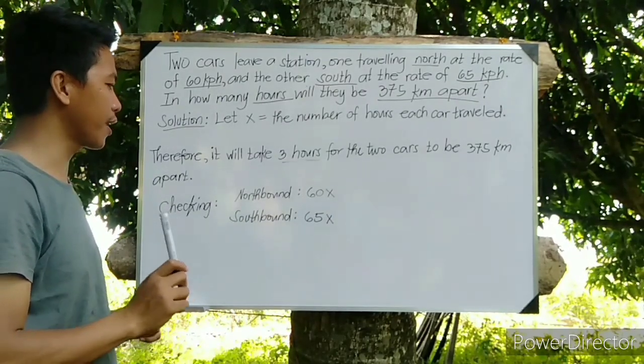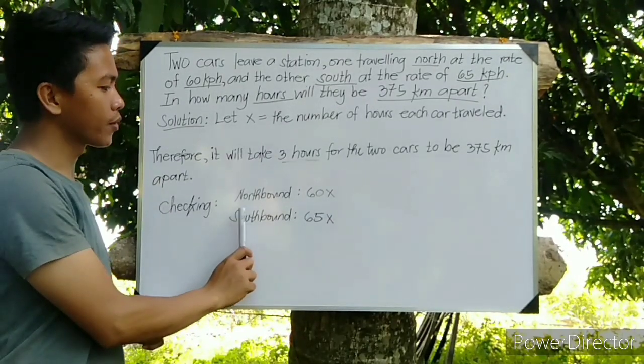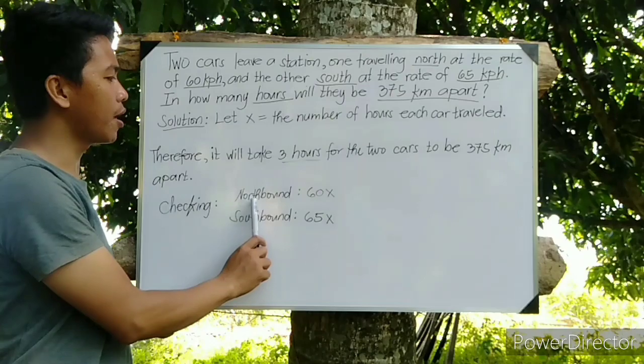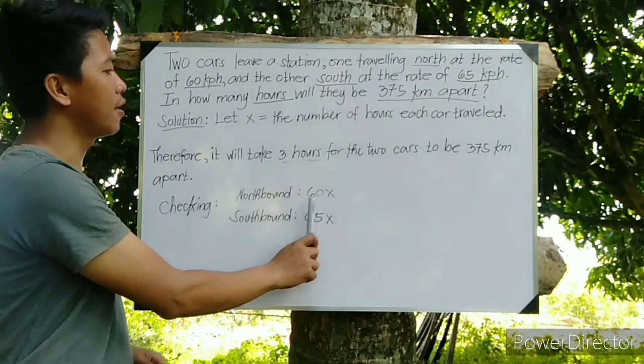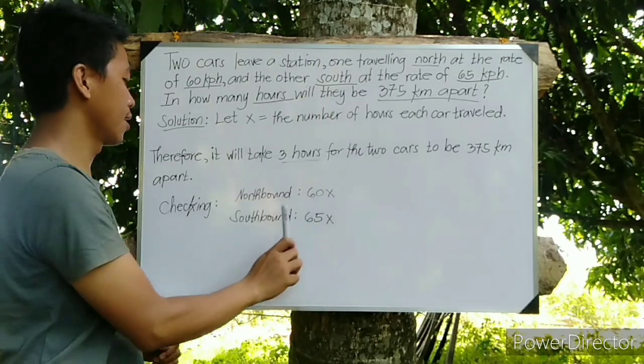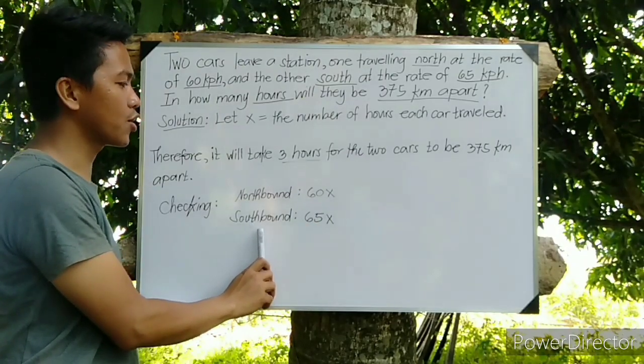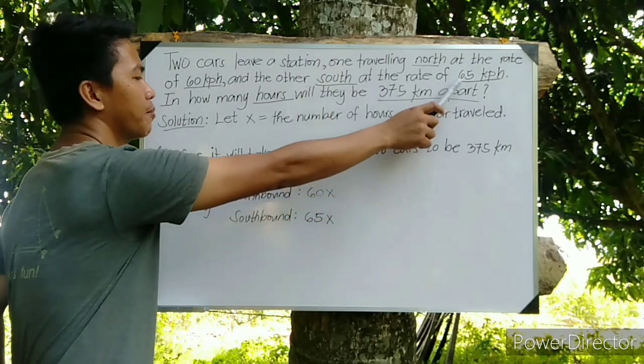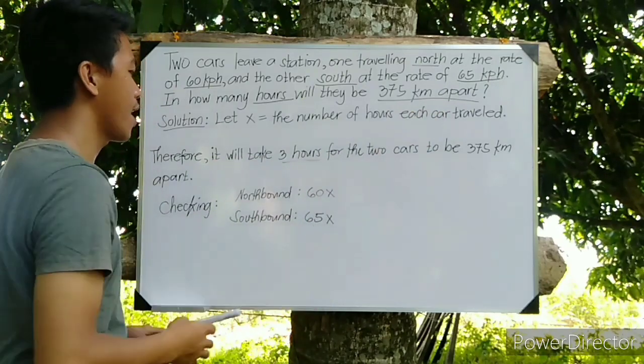So we are going to check if our answer is correct. I have here the two directions: for the northbound we have the distance of 60 kilometers per hour times X, then southbound direction we have 65 kilometers per hour times X.